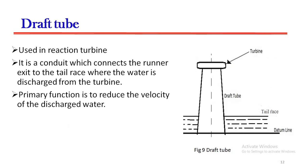Draft tube: A draft tube is used in reaction turbines. It is a conduit which connects the runner exit to the tail race where the water is discharged from the turbine. The primary function of the draft tube is to reduce the velocity of the discharged water.